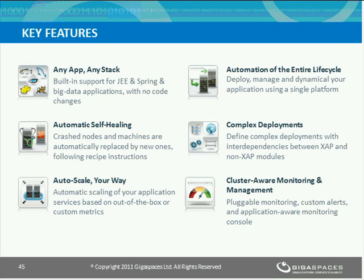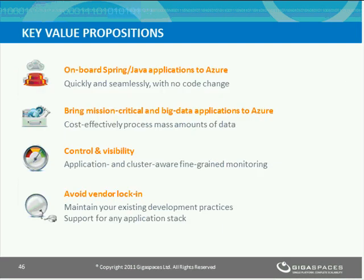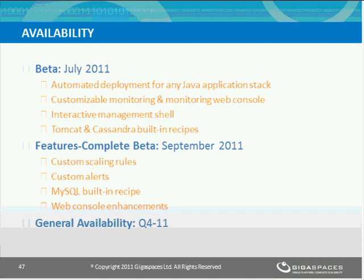These features lead to the value proposition summary with four main elements: onboard Spring and Java applications to Azure quickly and seamlessly with no code change; bring mission-critical and big data applications in the most efficient and cost-effective manner; get full control and visibility through application and cluster-level monitoring; and avoid lock-in by maintaining your existing development practices. The delivery schedule includes three milestones: beta available in a couple of weeks, feature completion by end of September, and general availability in Q4.